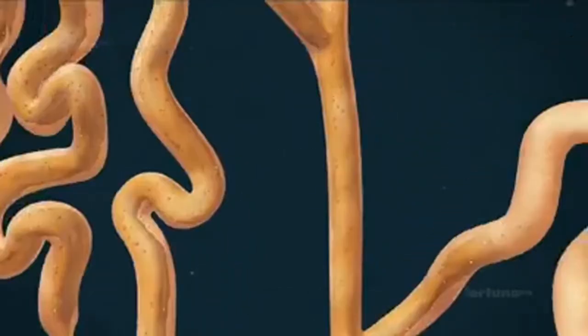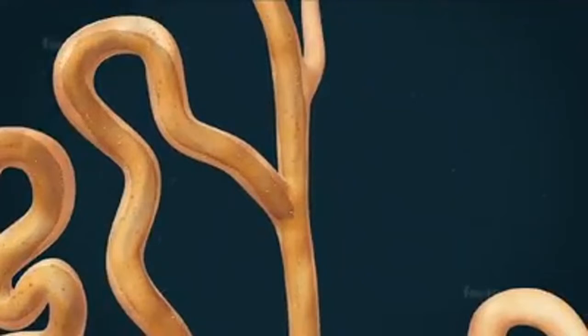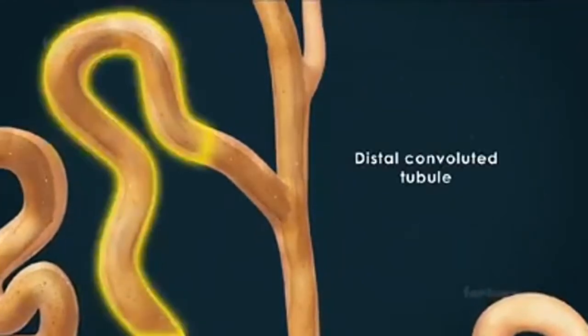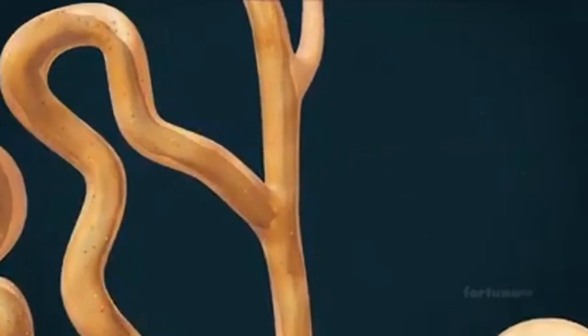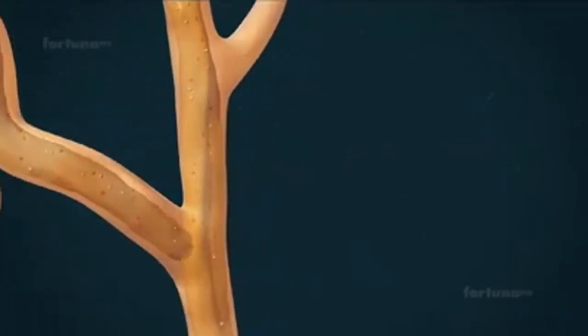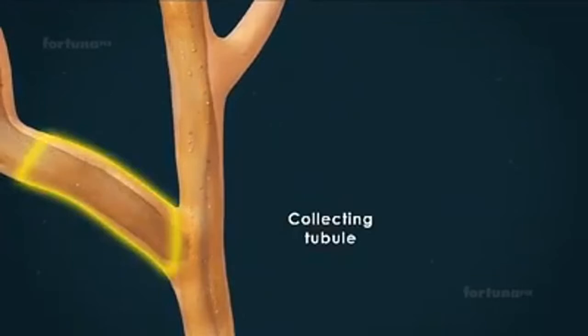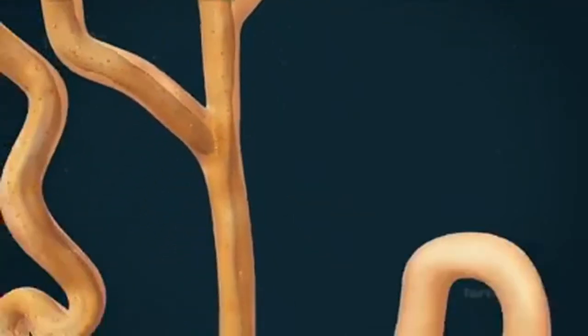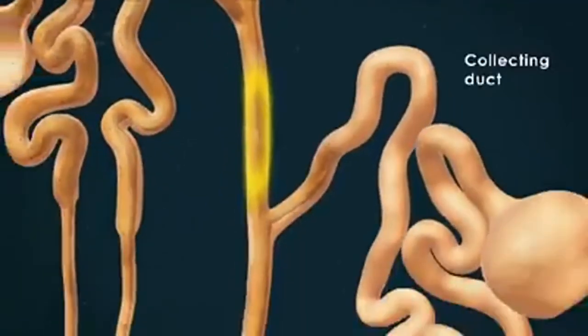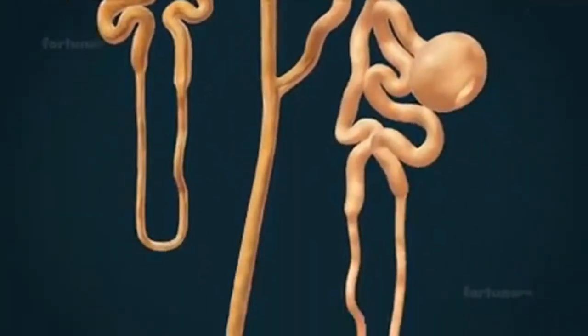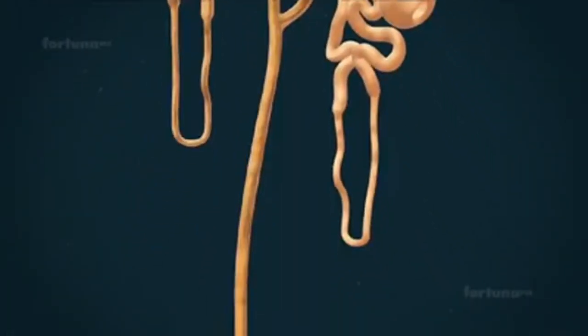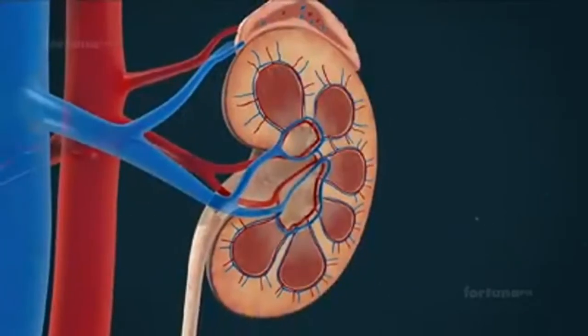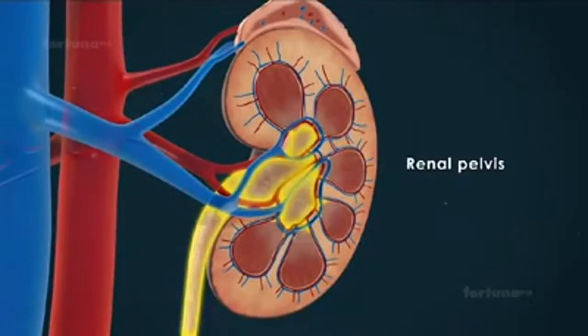The ascending limb travels into the renal cortex, at which point it dilates into a distal convoluted tubule. At the end of this tubule, a short collecting tubule is present. Several collecting tubules open into a common collecting duct, and several collecting ducts will join to form the ducts of Bellini, which then open into the renal pelvis.